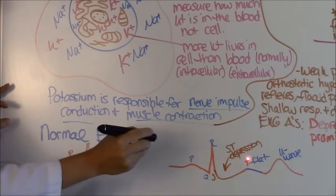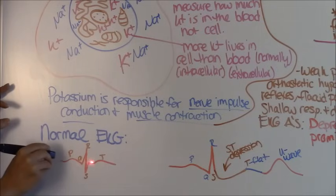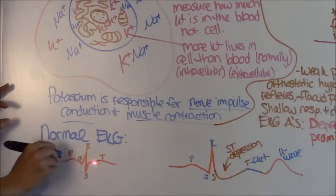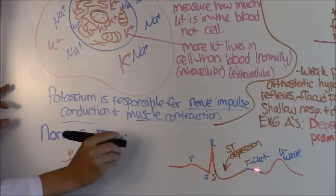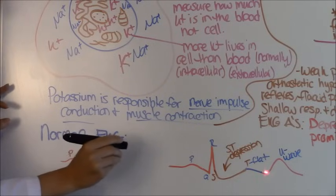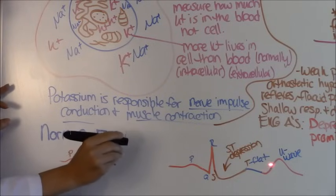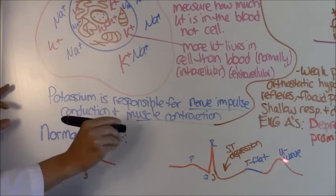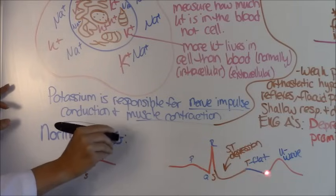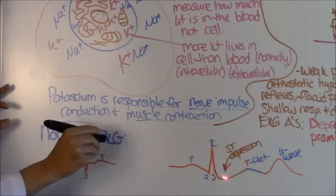You can also have a flat or inverted T wave. Notice this T wave on the normal EKG just has a little bump, but in hypokalemia it can be flipped or flat. And another thing you may see is a U wave — notice a normal EKG does not have a U wave, but you can have a prominent U wave right there with hypokalemia.